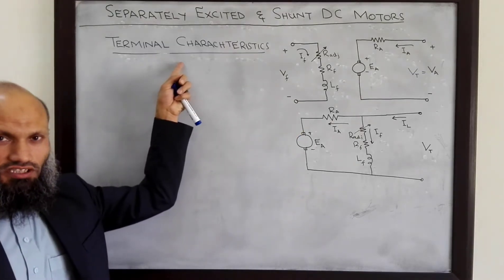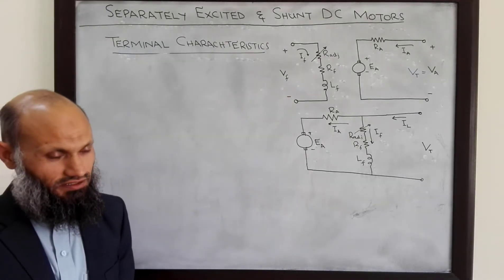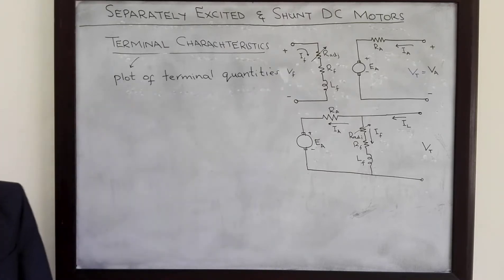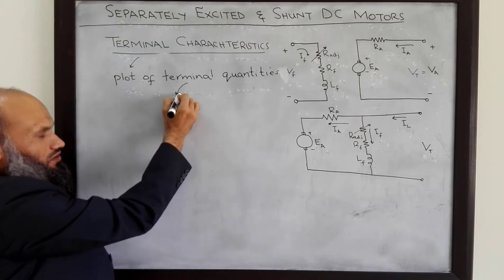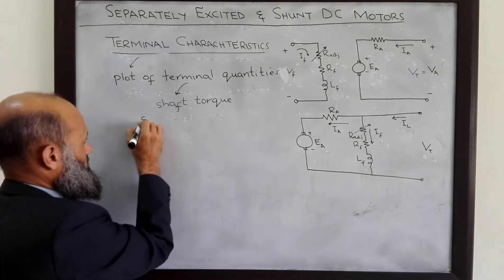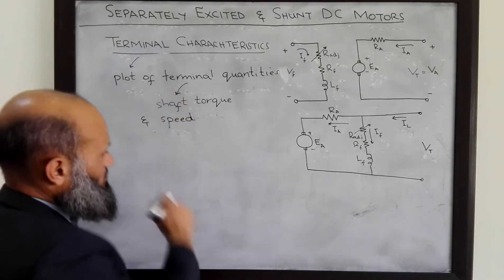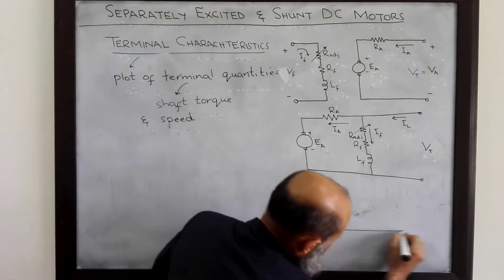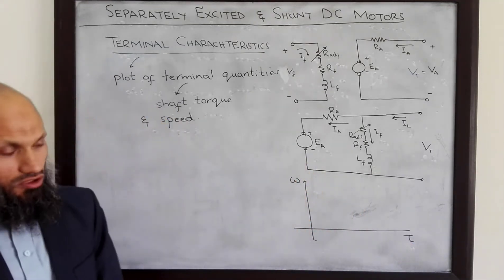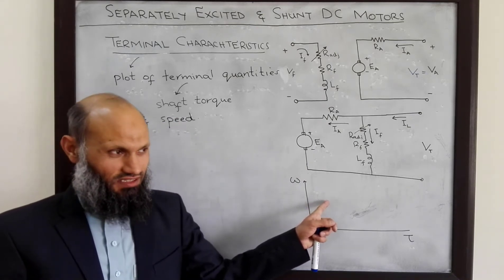Next, we talk about the terminal characteristics of shunt and separately excited DC motors. Terminal characteristics is the plot of the terminal quantities, and in case of motors, these terminal quantities are the shaft torque and the speed of the rotor. That is, the terminal characteristics is a plot of torque versus speed of the motor, and this plot is for steady-state situations.